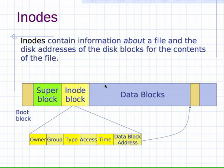I cannot emphasize this often enough: information about a file is actually all stored in these entries and the inodes — the inode table. Things like who is the owner of a file, which you would see with the `ls -l` command, the group associated with the file, the type of file, access times, and size — all those things are not stored along with the contents. The contents are elsewhere, and all you have is a pointer to the contents.